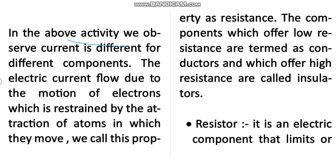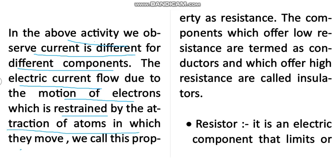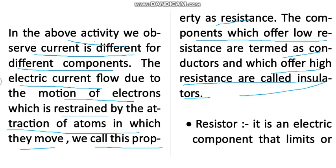What we observe is that current is different for different components because electric current flows differently through each material. Electrons in motion are restrained by the attraction of atoms, which is the property we call resistance. Components that offer low resistance are termed conductors, while those that offer high resistance are called insulators.